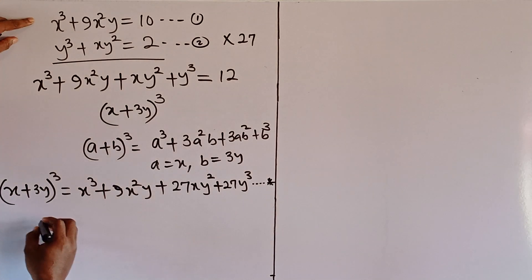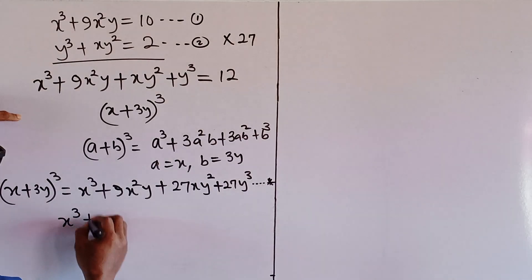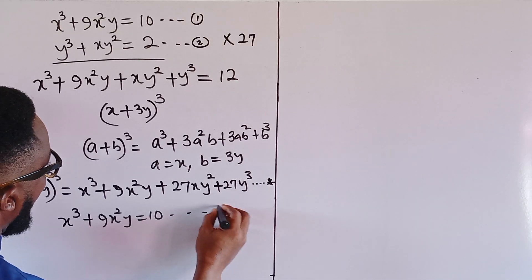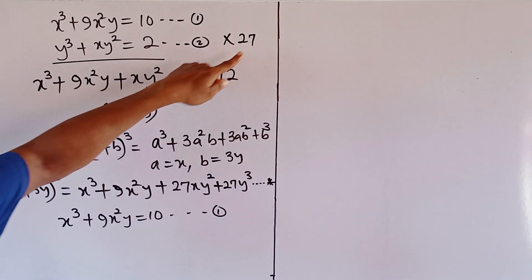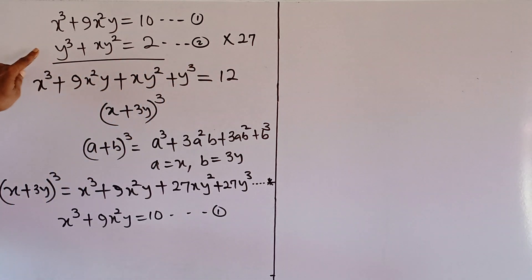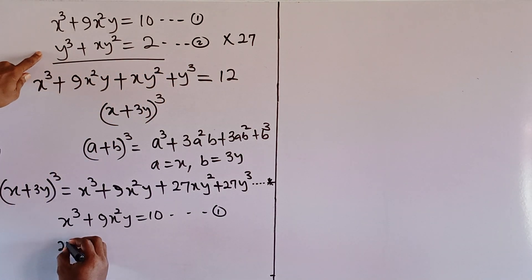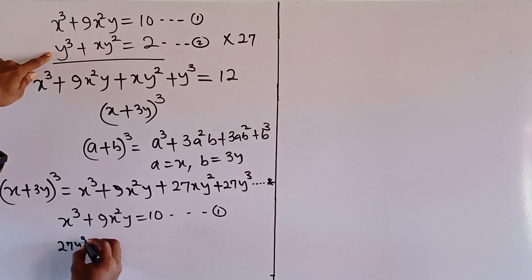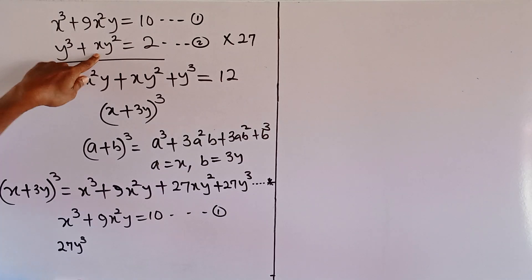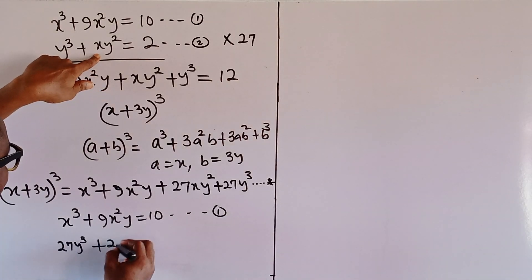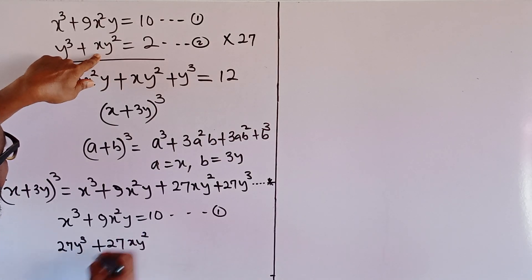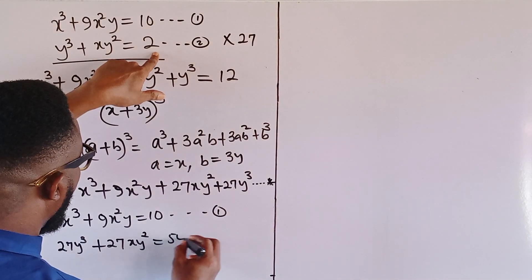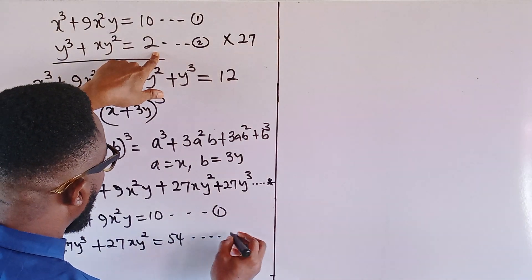I will rewrite equation 1: x³ + 9x²y = 10. Then for equation 2, I'm going to multiply everything by 27. So the first term will be 27y³, the second term will be 27xy², and 27 multiplied by 2 gives 54 on the right side. We call this equation 3.